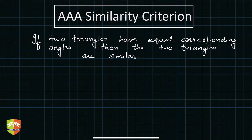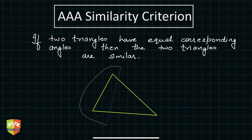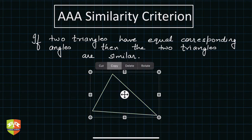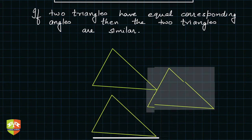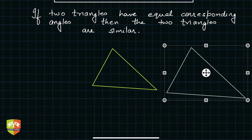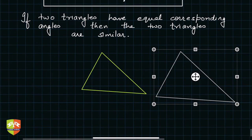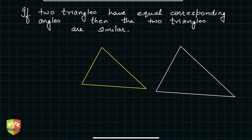Let's draw a triangle first — here is triangle one. Now let's draw a triangle similar to this, a copy that is a little bigger in size. Appearance-wise both do look similar. Let me write the names: triangle ABC and the other one, triangle DEF.